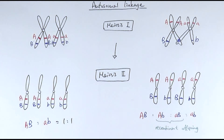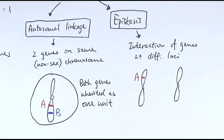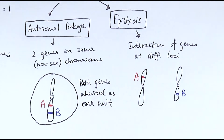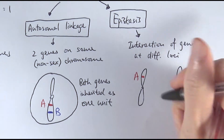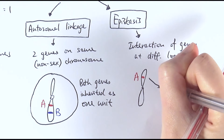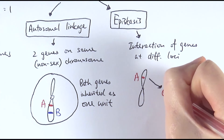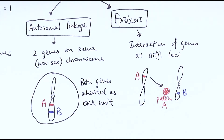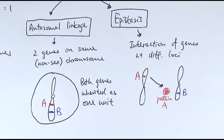Apart from autosomal linkage, there is another possible reason to explain an unexpected ratio, which is epistasis. Epistasis is about the interaction of genes at different loci - usually implying they are on different chromosomes - but the thing that stops it from showing the expected ratio of 9 to 3 to 3 to 1 is that the genes are interacting with each other in different ways. For example, gene A on one chromosome could be expressed to produce a particular protein - let's call it protein A - and protein A might be an activator protein that binds to gene B and causes it to be expressed, or it might be an inhibitor protein that stops it from being expressed. That's what we mean by the interaction of genes.